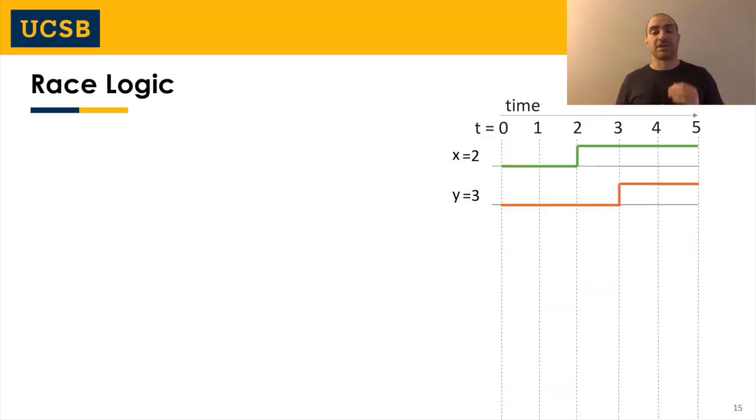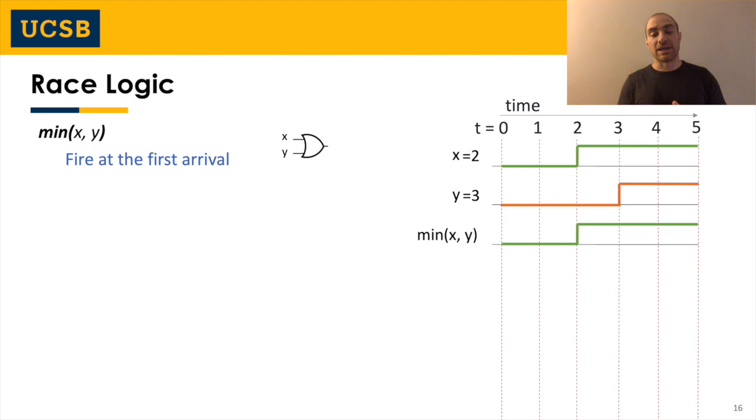In RACE logic, information is encoded in delay rather than in binary format. For example, let's assume that we have two variables, x and y. For the representation of their values, only a single wire per variable is going to be required. When x equals 2 in a synchronous system, then a positive edge is going to be observed on that wire after two clock cycles, while for y equal to 3, an edge is going to appear after three clock cycles. Now, if the signals get routed to a NOR gate, we know that the OR gate is going to fire when the first high input arrives. Thus, a NOR gate realizes the min function under this representation.